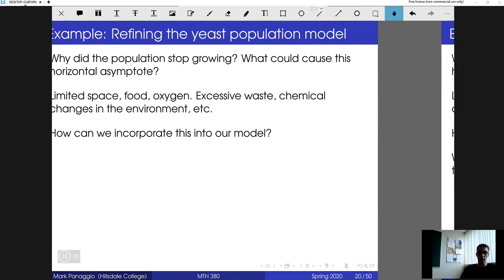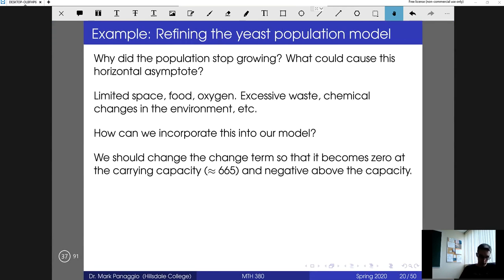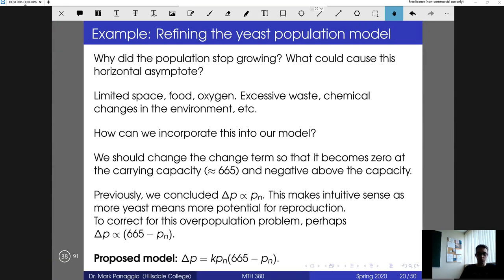How can we incorporate this into the model? When we start to get near that carrying capacity, the growth should slow and should approach zero. And if we exceed that capacity, the growth rate should actually become negative. One way to do that would be to assume that the change should be proportional to 665 minus the population. If the population is bigger than 665 that would be negative. If it's smaller than 665 it's positive. If it's equal to 665 that would be zero. Based on that, we've had two proportionality relationships: one that the change is proportional to p, the other that it's proportional to 665 minus p. So we can merge them together, saying that it's proportional to the product of both of them.